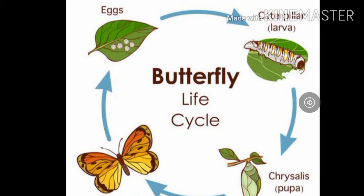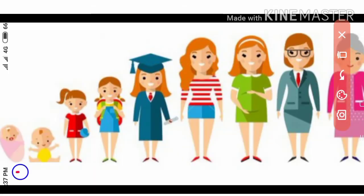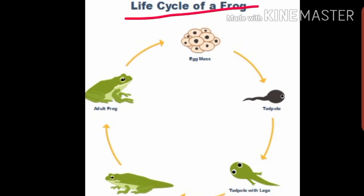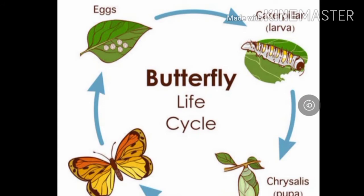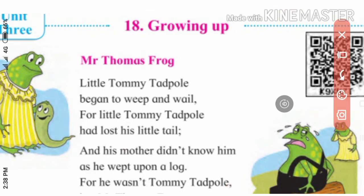Just as a baby boy develops into an adult and then grows old, and a baby girl develops into an old lady, similarly there are different stages of the life cycle of frogs: egg, tadpole, tadpole with legs, young frog, and adult frog. For the butterfly: egg, larvae, caterpillar, chrysalis, pupa, and then adult butterfly. From this poem we learn the many stages of the frog and butterfly.